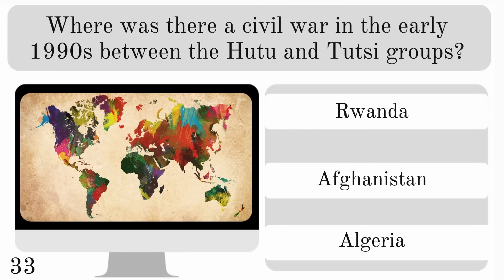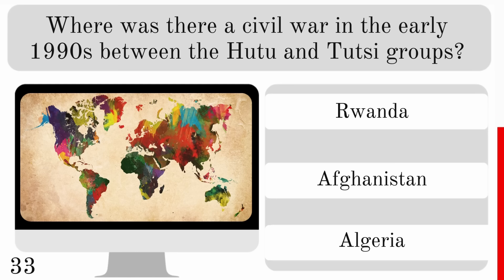Where was there a civil war in the early 1990s between the Hutu and Tutsi groups? Was that in Rwanda, Afghanistan or Algeria?